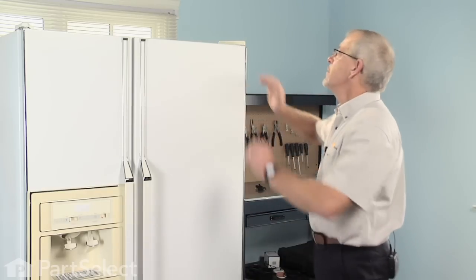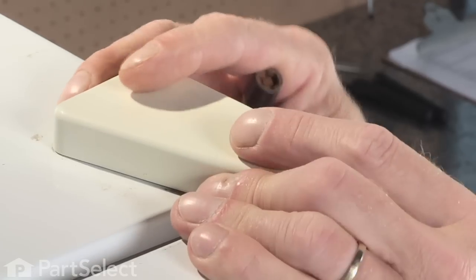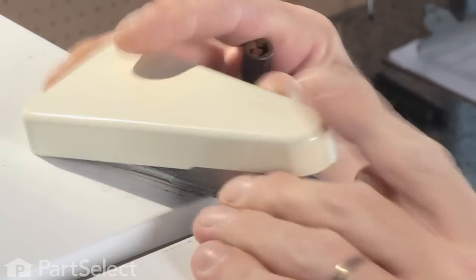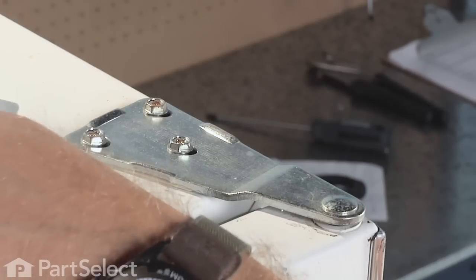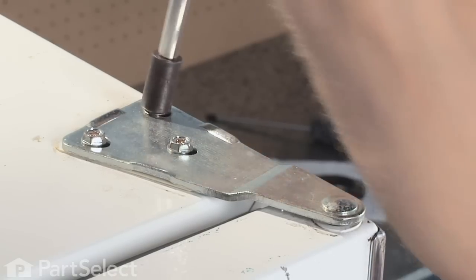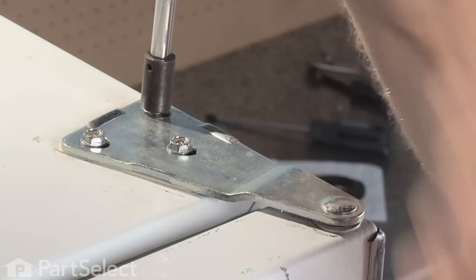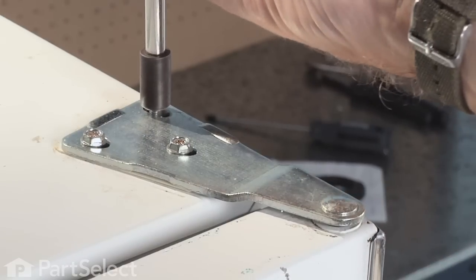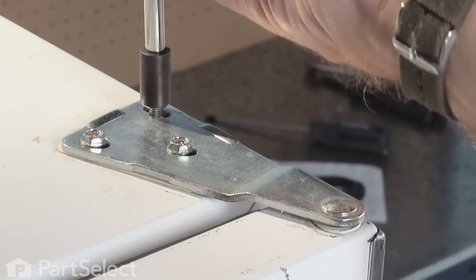Once that's been done, we simply need to remove the hinge cover on the top. The fresh food side is just a friction fit. That exposes three five-sixteenths screws that hold the hinge in place. Remove those.